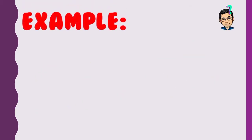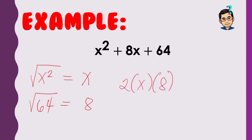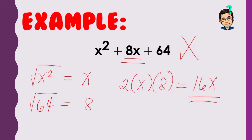Example 2: x² + 8x + 64. Extract the square root of the first term: x. Square root of the last term 64: that is 8. Now check: 2 times x times 8 is 16x. But the middle term of the given is 8x, not 16x. Therefore, this is NOT a perfect square trinomial — we cannot factor it using perfect square trinomial.